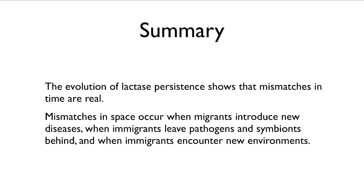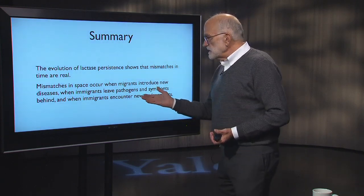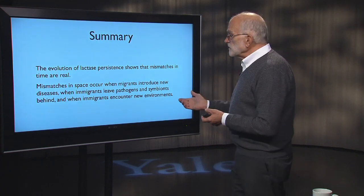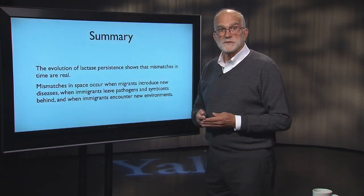In summary, the evolution of lactase persistence shows that mismatches in time are real, and it is used as the paradigmatic example for mismatch in time because we can date the origin of dairying archaeologically — we can see it in the fossils of dairy animals, so we know that domesticated dairy animals were not around more than about 10,000 years ago. All diseases of civilization have a logic underpinning them which has been checked and seems plausible. Mismatches in space occur when migrants introduce new diseases, when immigrants leave pathogens and symbionts behind, and when immigrants encounter new environments — all of those conditions can produce mismatch.